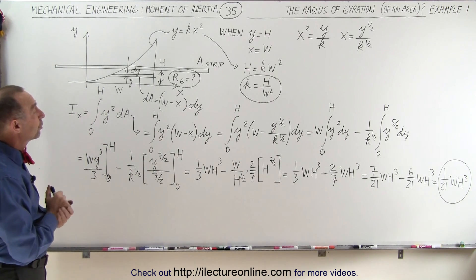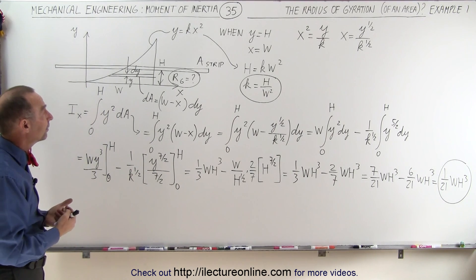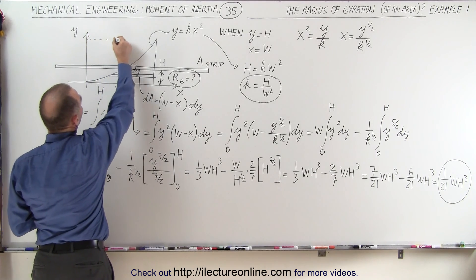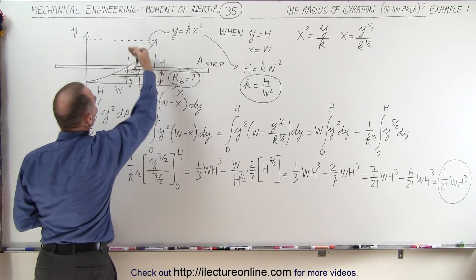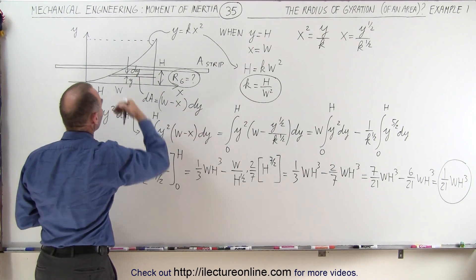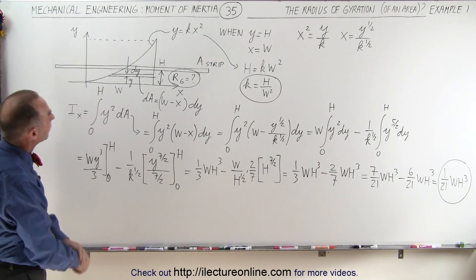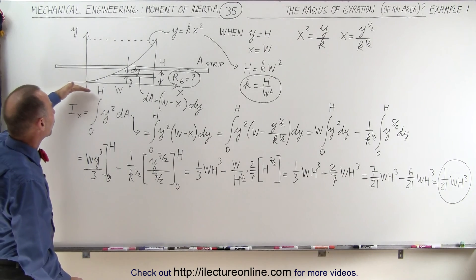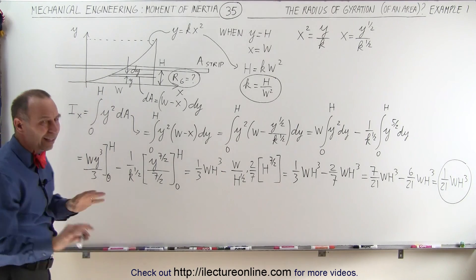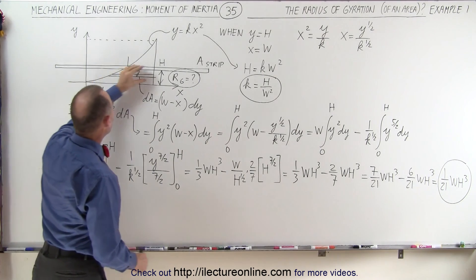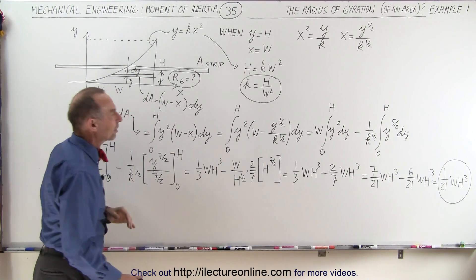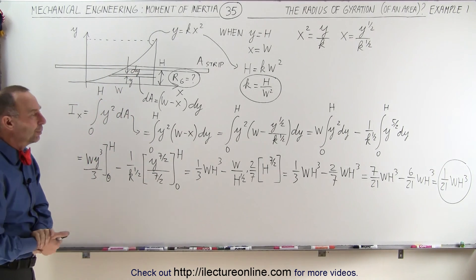Does 1 over 21 seem about right? Well, if this were a rectangle rotating about the x-axis, that would give (1/3)wh³. We get 1 over 21 instead of 1 over 3, which seems reasonable since most of the mass of this figure is very close to the x-axis.